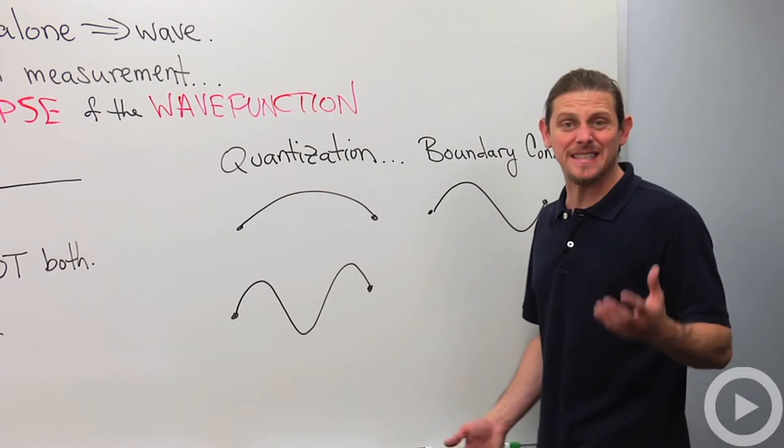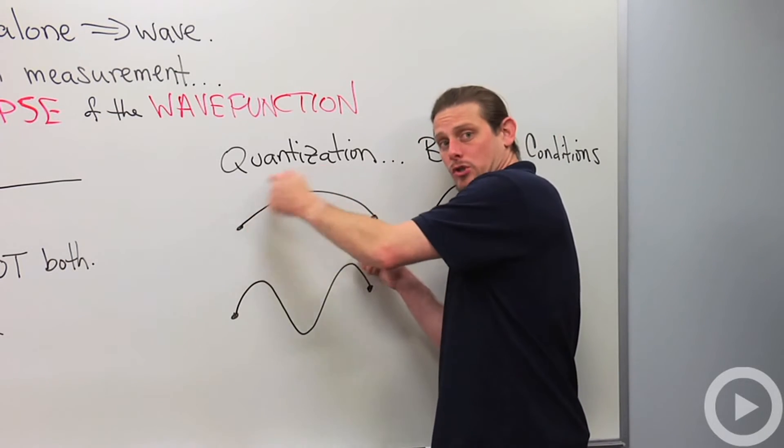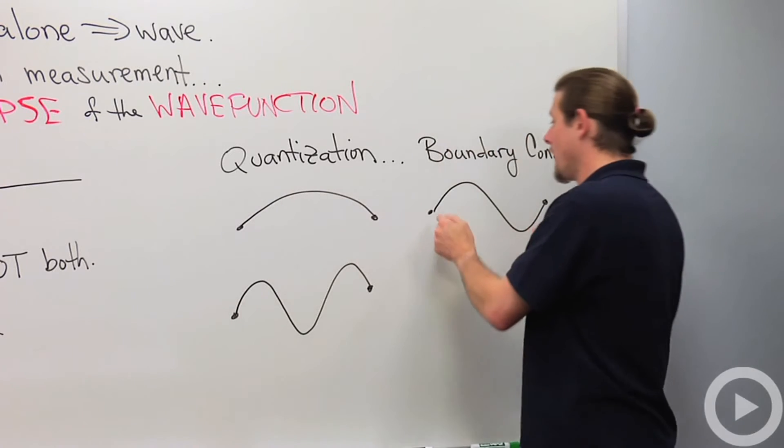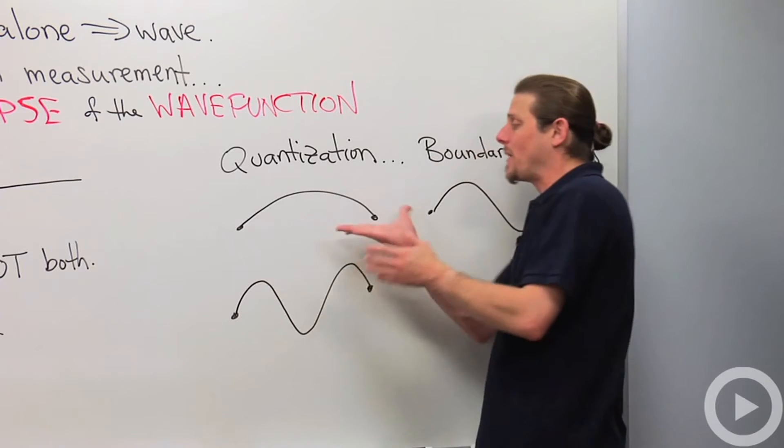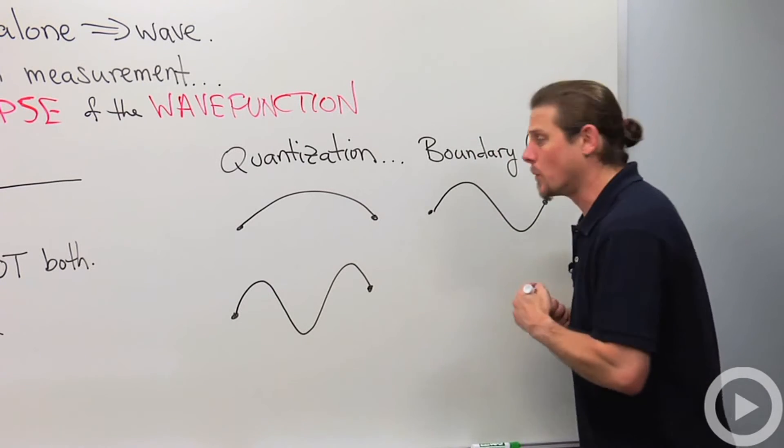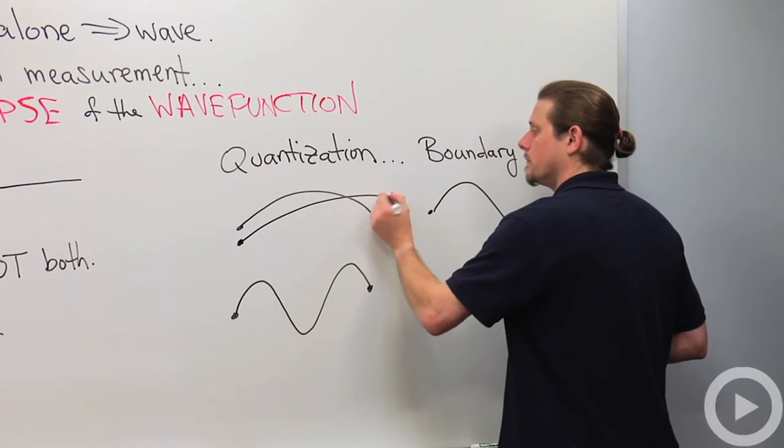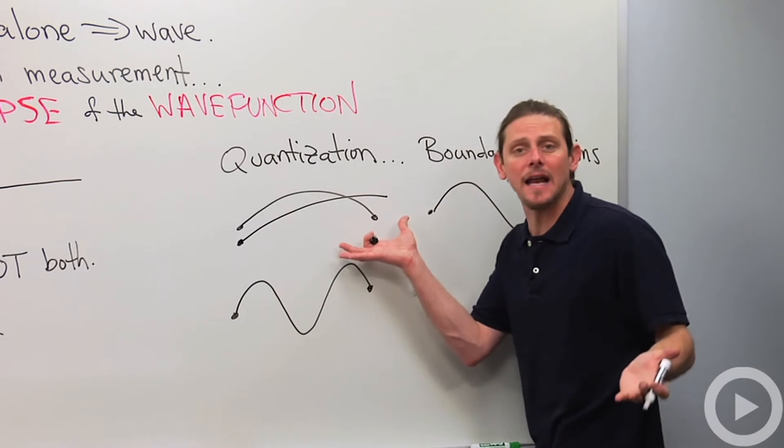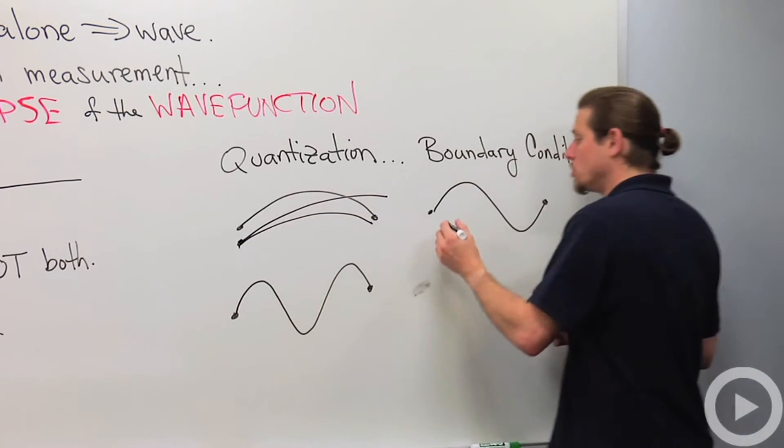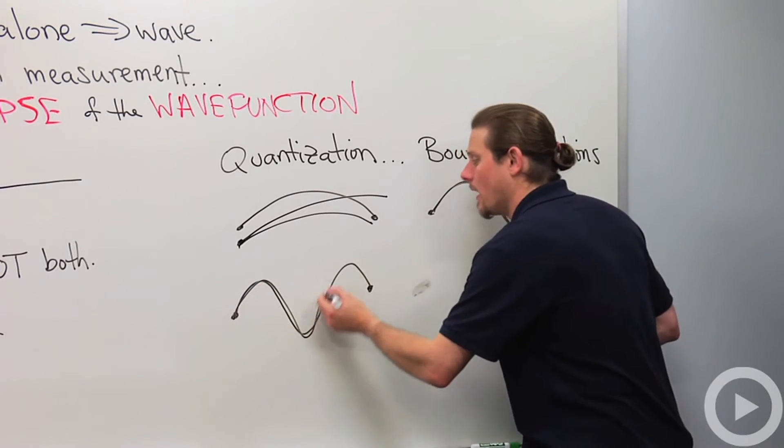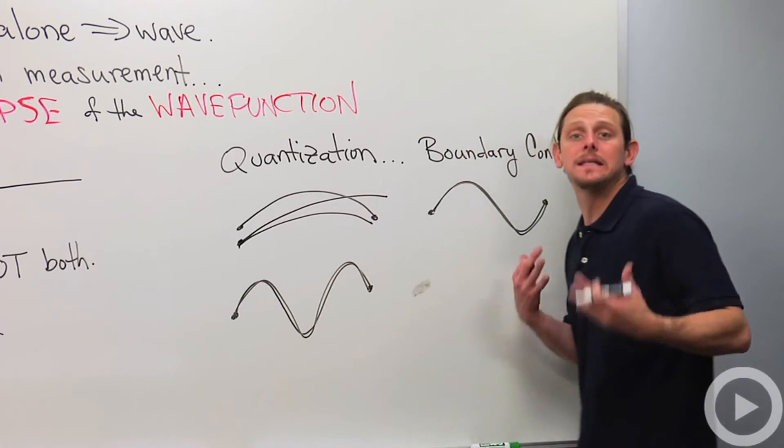So just like we have a standing wave in between two points, we can have the first harmonic, we can have the second harmonic, we can have the third harmonic, but we can't have anybody in between. So we can't have something that goes like this because it doesn't work. It doesn't satisfy the boundary conditions. So I've got to have a whole hump, two humps, three humps. I can't have one and a half humps. It doesn't work that way.